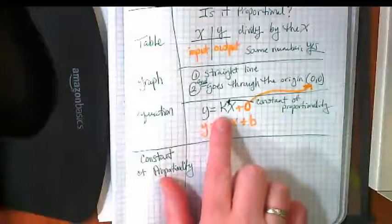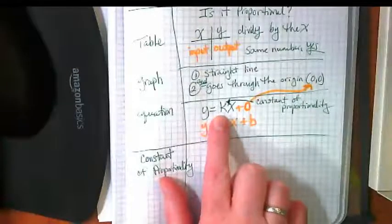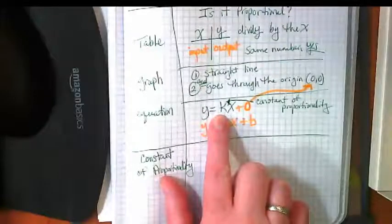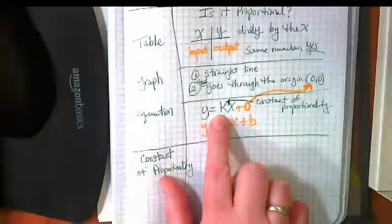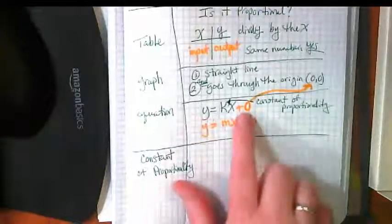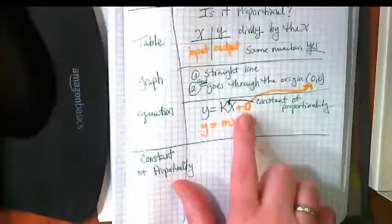We just call this Y equals KX because the K is the constant. I don't know why K and not C, but they both have that hard sound, right? Constant. X is our input, Y is our output, zero is the origin.